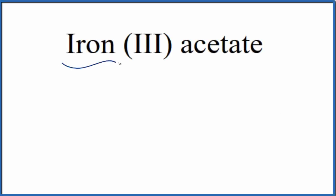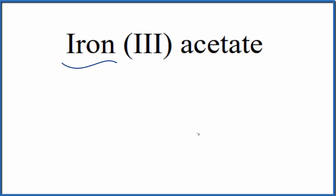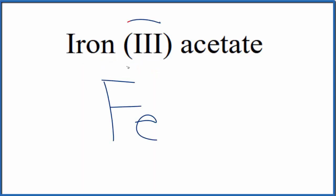To write the formula for iron 3 acetate, let's first write the element symbol for iron, and that's just Fe. The 3 tells us that the iron will be 3+.